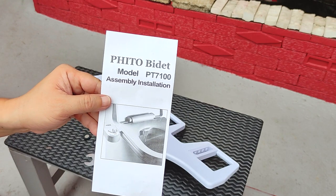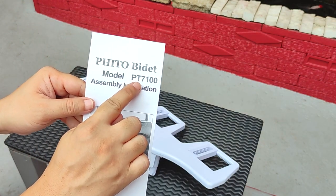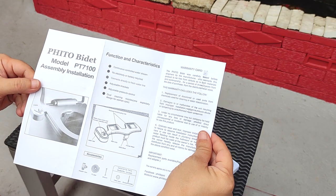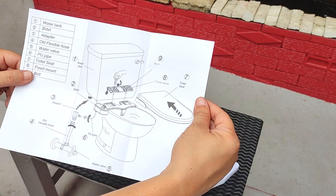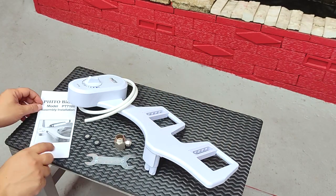And finally we have the assembly instructions and the warranty card. By the way, the instructions also stated that we will need thread seal tape, also known as Teflon tape, and a screwdriver, both of which are not included in the package.